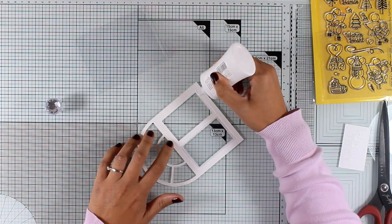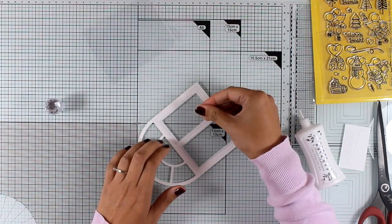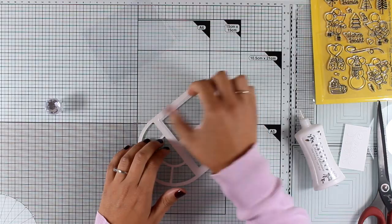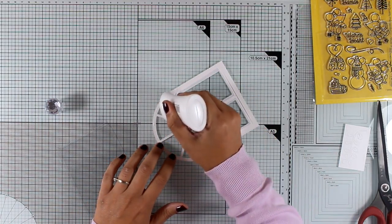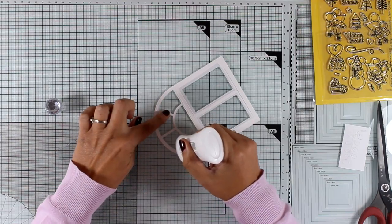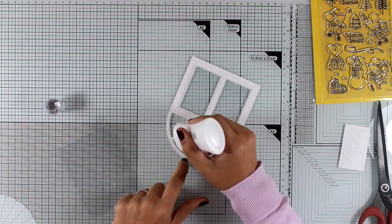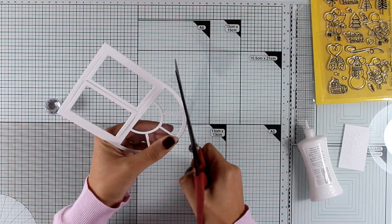I'm not going for a shaker card today, so I want my windows to open. If I wanted to create a shaker card and have snow, for example, at the back of my window, then it could be a great idea to stick one piece of acetate at the back of your frame all over the place. This is going to stick together the windows and they will not open and have your sequins fall out.